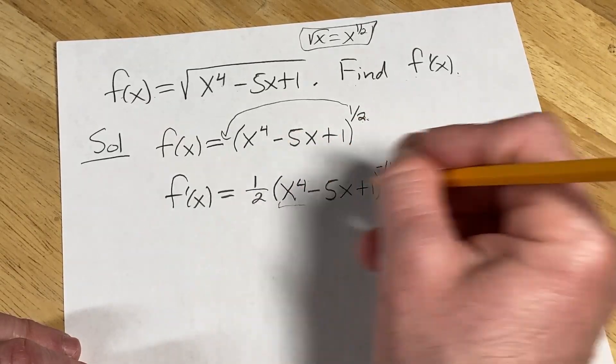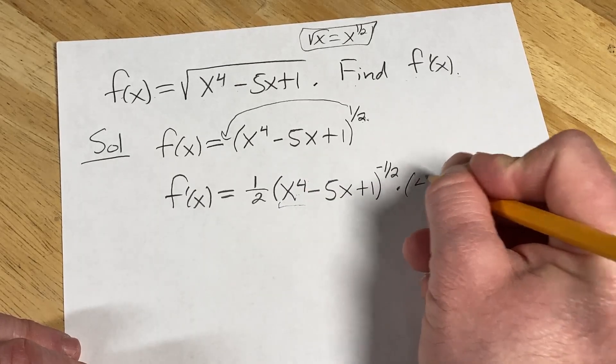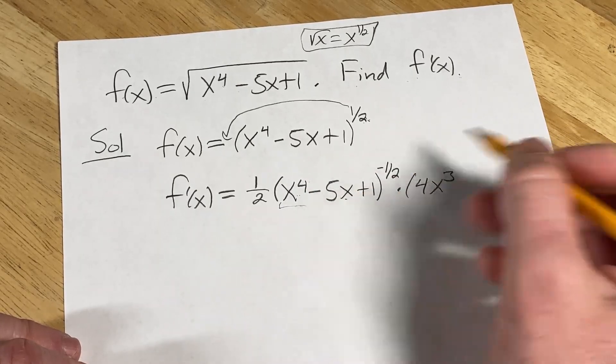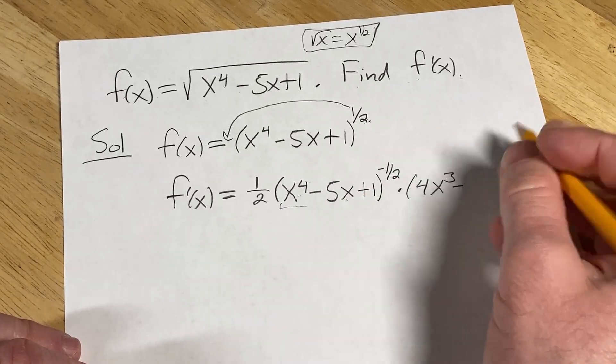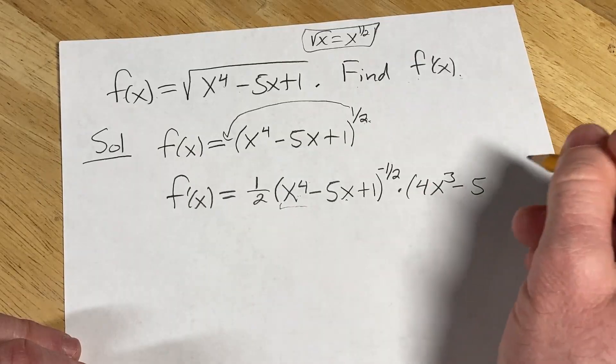Here we just use the power rule. So this will become 4x cubed. And the derivative of minus 5x is minus 5. And the derivative of 1 is 0, so we leave it alone.